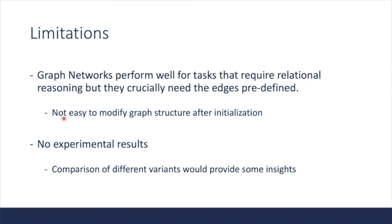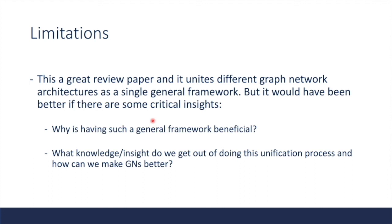There are some limitations in this work. Graph networks perform well for tasks requiring relational reasoning, but they crucially need the edges predefined, and it's not easy to modify graph structure after initialization. This paper provides no experimental results, and comparison of different variants or ablation studies should provide insight into why each component is useful and how it can be improved. Overall, this is a great review paper that unites different graph network architectures into a single general framework, but it would have been better if there were critical insights into why such a general framework is beneficial and how we can make networks better.